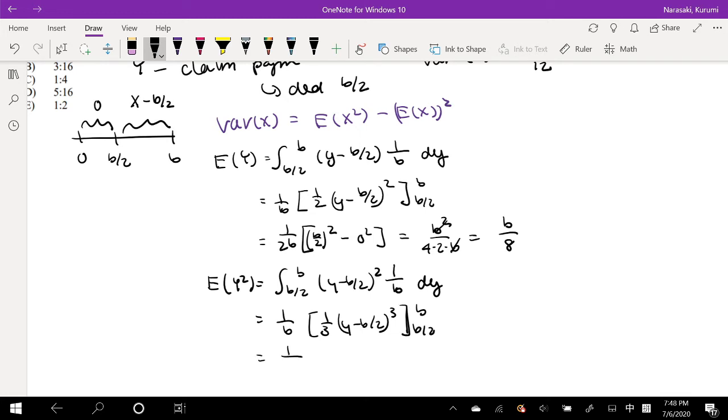This is equal to, I'm going to keep the constants together, 1 over 3b. Plugging in b here, b minus b over 2, that's just b over 2, this thing cubed, minus b over 2 minus b over 2, that's just 0 cubed. So this we get is b cubed over 8 times 3 times b. Well, one of the b's cancel out, so we get b squared over 24. Oh, close one.